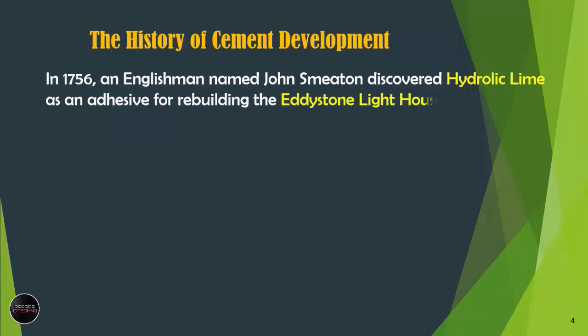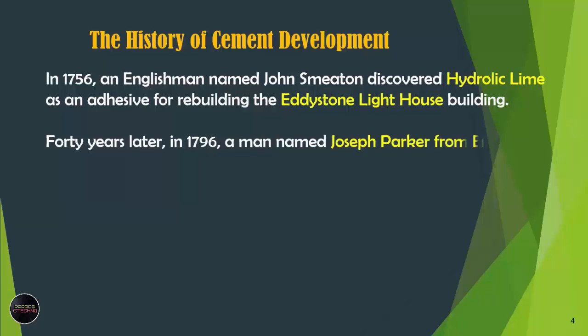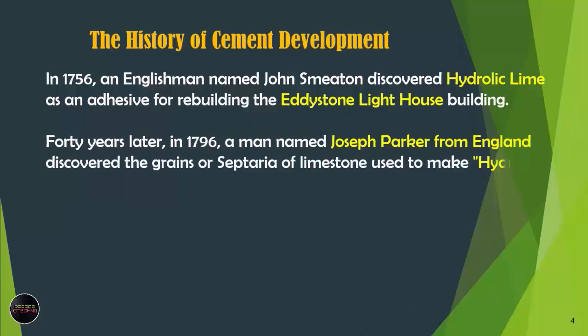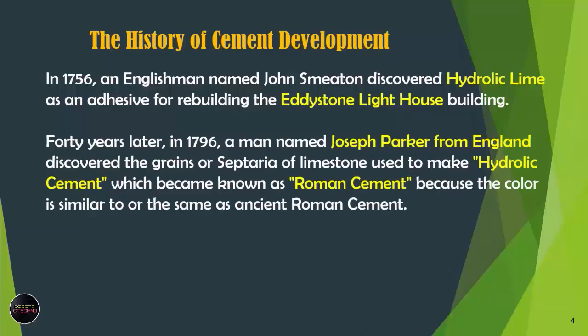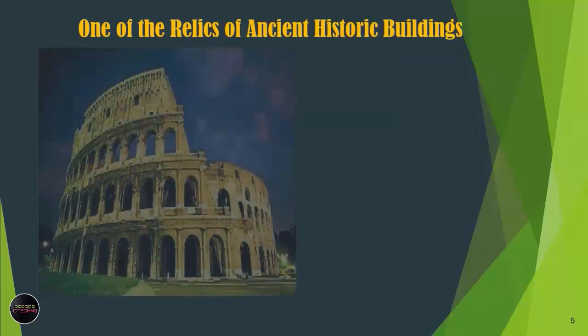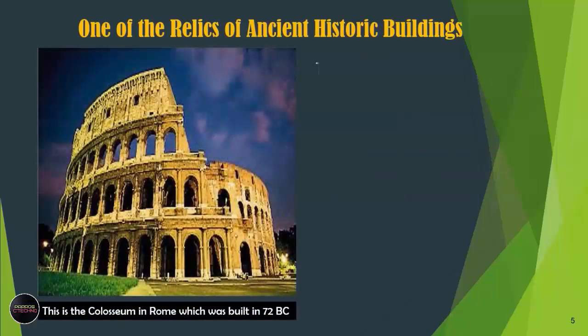In 1756, an Englishman named John Smeaton discovered hydraulic lime as an adhesive for rebuilding the Eddystone Lighthouse. Forty years later, in 1796, a man named Joseph Parker from England discovered the grains or septaria of limestone used to make hydraulic cement, which became known as Roman cement, because the color is similar to or the same as ancient Roman cement.